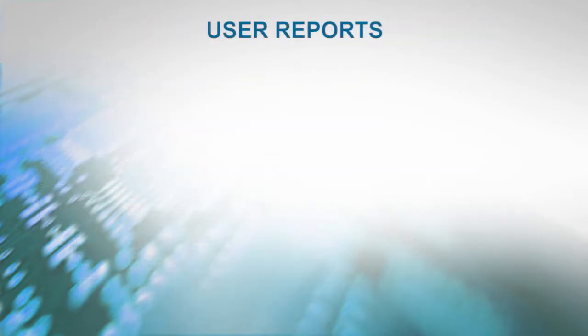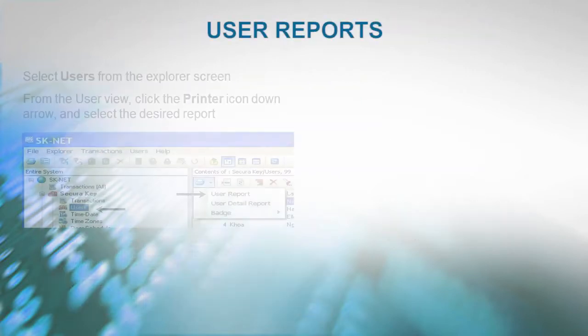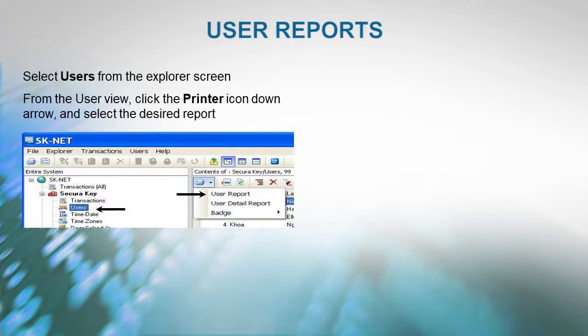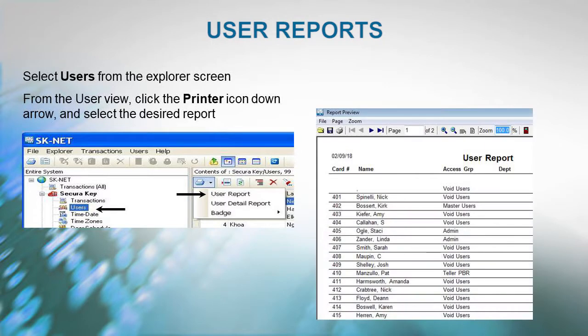For User Reports, first select users from the Explorer screen. From the user view, click on the printer icon down arrow and select the report you wish to create.